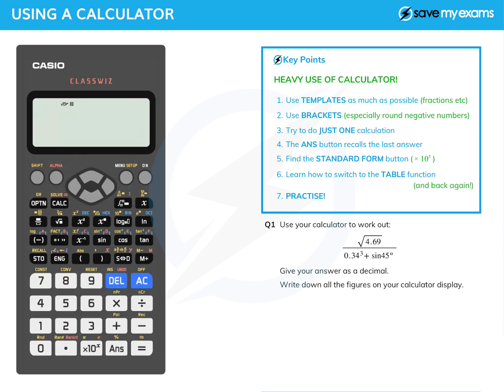First of all, we want to use our calculator to work out this. The biggest template there is a fraction, that's just below the option key. We want a square root on top, you see it's flashing on the top, so hit square root and then 4.69.